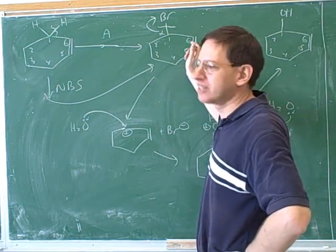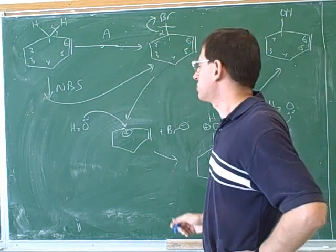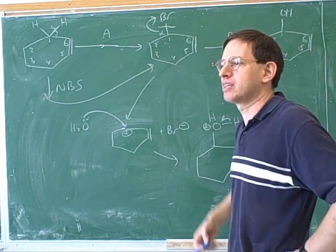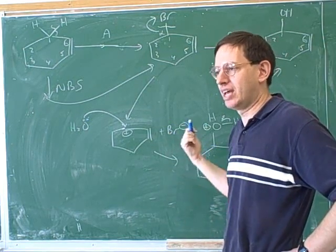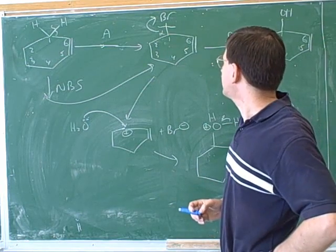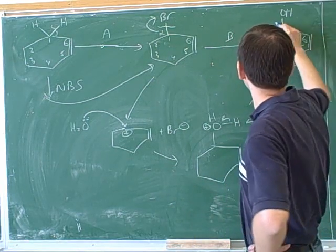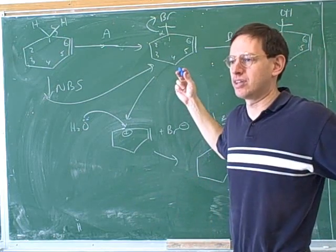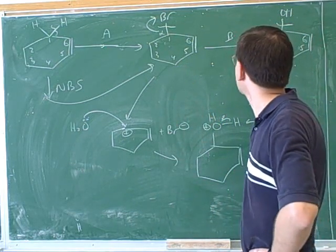But here, we weren't attacking the double bond. So this was just a normal SN1 reaction. So remember that not everything is an alkene addition. Some things are just SN1, SN2, E1, or E2, or some of the other reactions that you've seen. The thing that you should say to yourself here is, I'm replacing the bromine with an OH. Well, that should look like a substitution. This is a normal substitution where we replace the bromine with an OH.